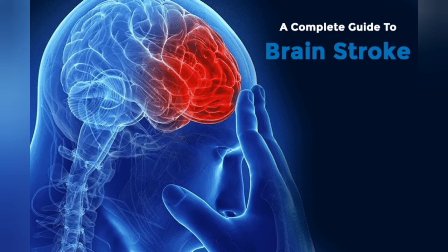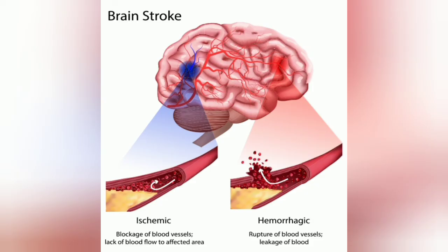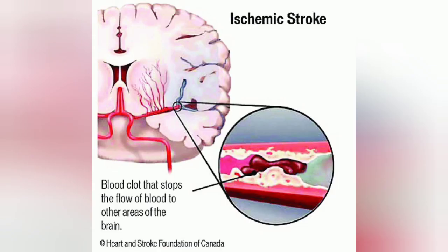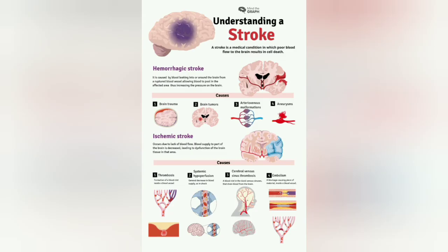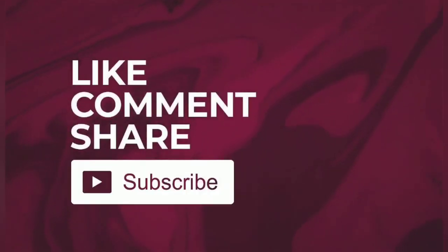So students, in this short class you got to know what a stroke is, how stroke is caused, what types of stroke there are, what the main risk factors are, and the signs and symptoms of a stroke. That's all for today — we'll meet you in another class with another video. Keep learning, and thank you.